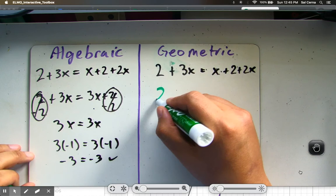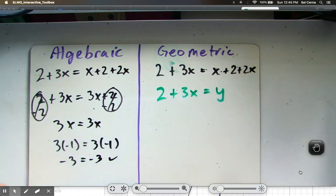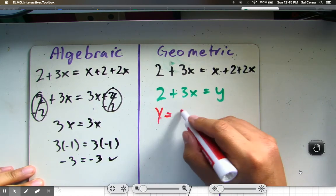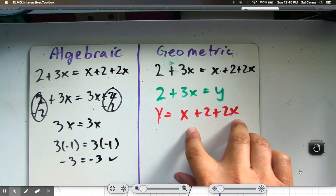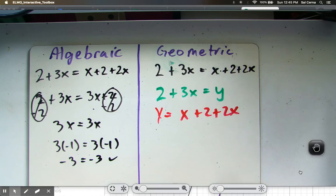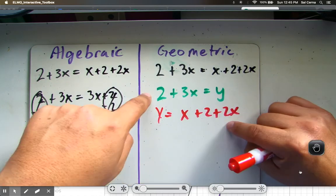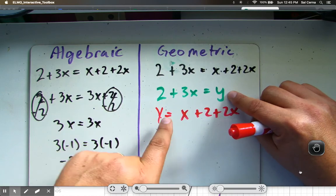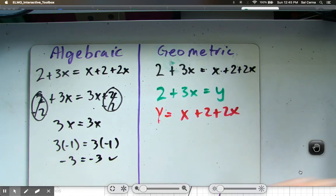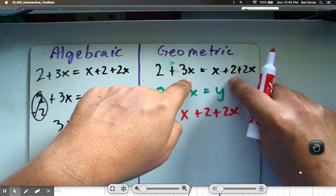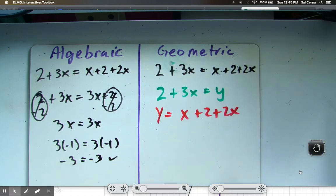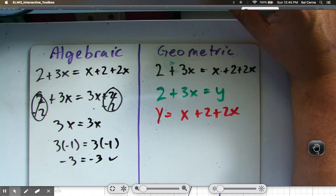The first one, I'm going to go with 2 plus 3x equals y. And the next one, I'm going to say y equals x plus 2 plus 2x. If you group these and you got y equals 3x plus 2, you're fine. I'm just trying to prove a point here. These two expressions are equal to each other because they equal the same variable y. Therefore, this comes back to my original problem, which checks out.